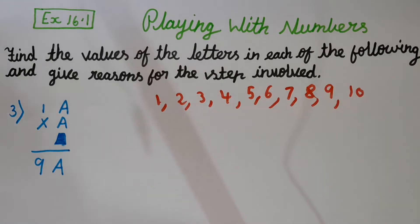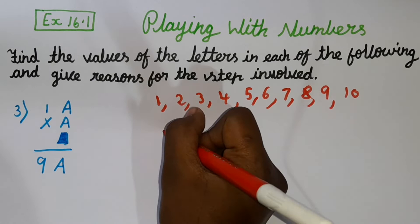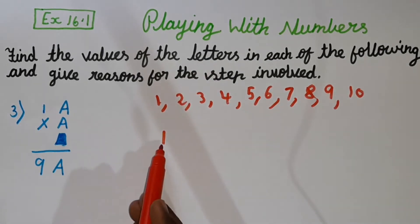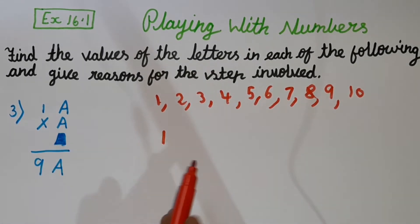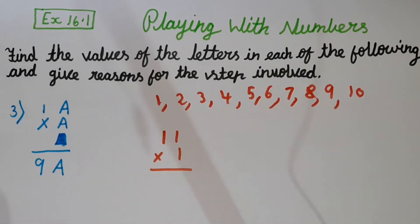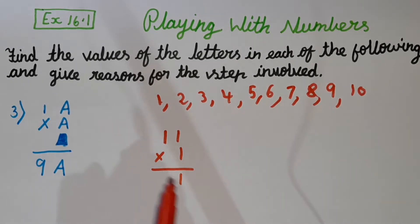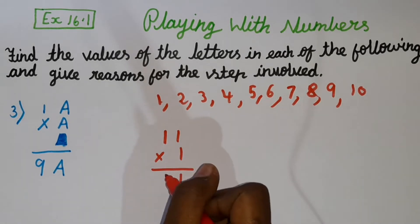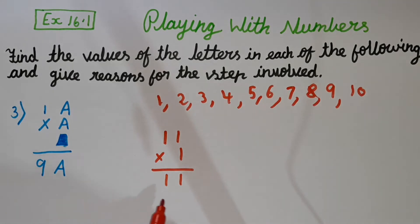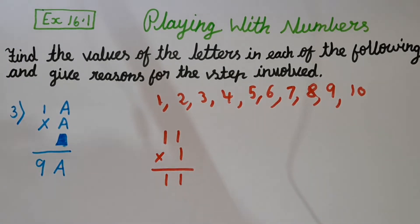First of all, let's multiply this with 1. I am naming the A as 1 into 1. So 1 into 1 is 1. We got the same number and 1 into 1 is 1. But here we got a different number. Here we should get the number 9. We got 1 instead of 9. So with 1, it's not possible. We won't get the right answer.